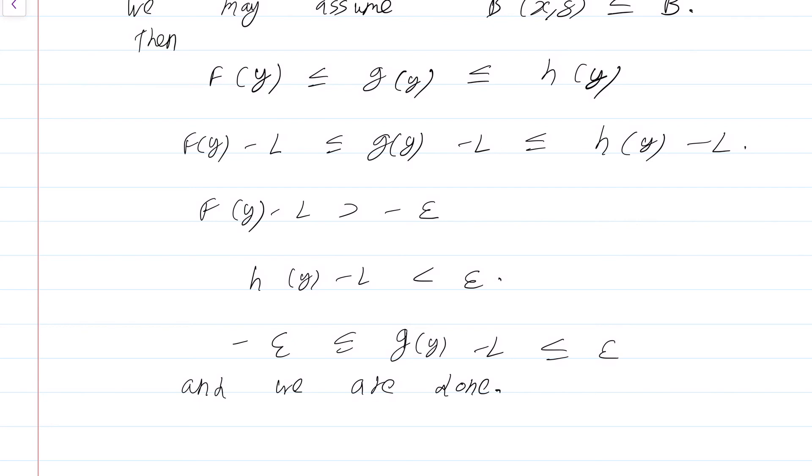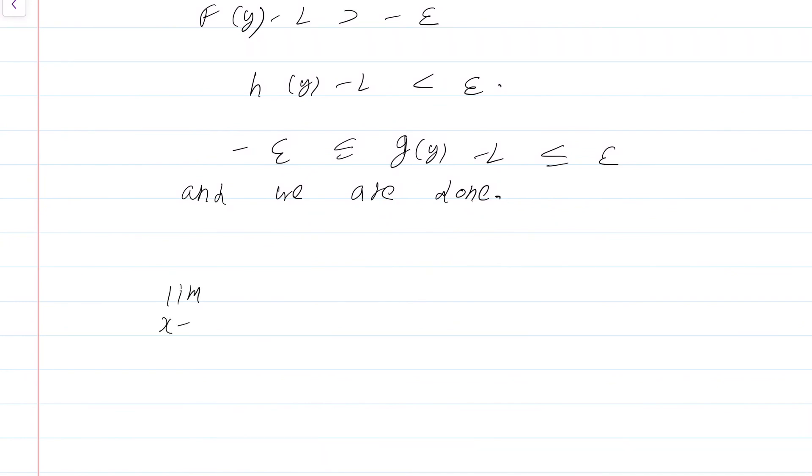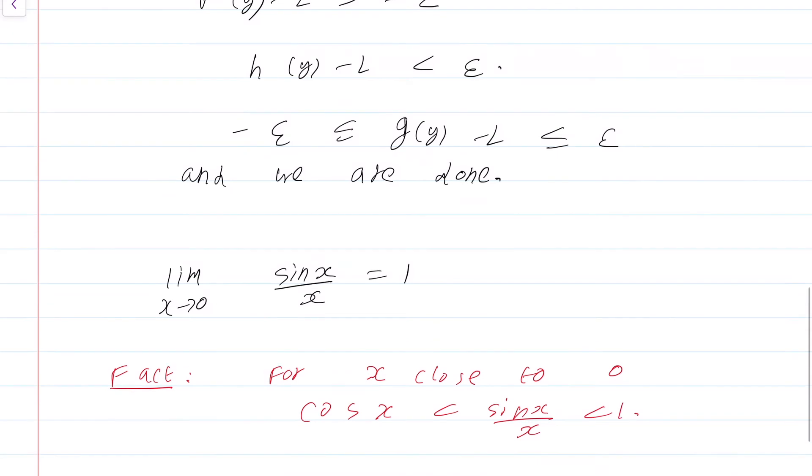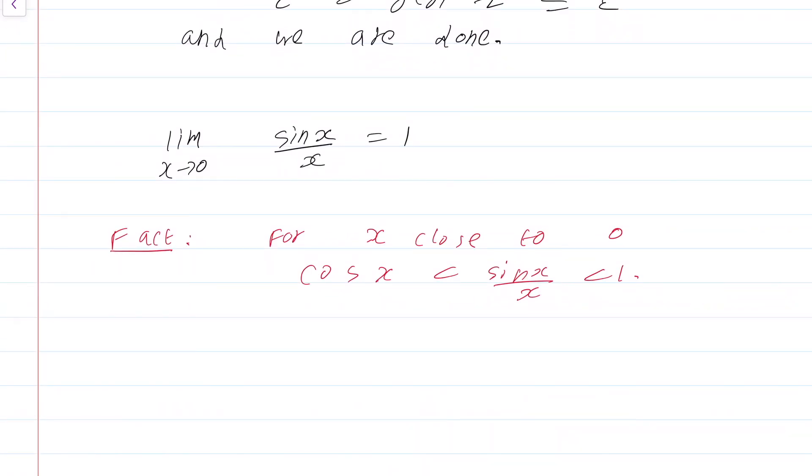Coming back to more pressing issues, how do we use this to show limit x going to 0, sin x by x equals 1? I need to use a fact: for x close to 0, cos x < sin x / x < 1. This will be proved at a later point when I define the trigonometric functions precisely. Because of this, notice that the right hand side is a constant function; this converges to 1 as x goes to 0. And cos x is a continuous function, that is another fact that you know, and cos 0 is 1.